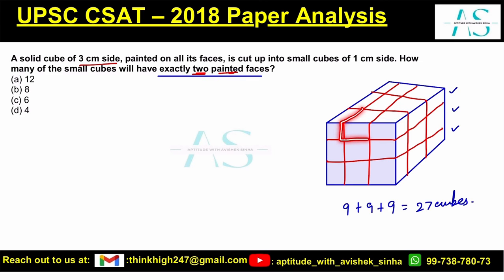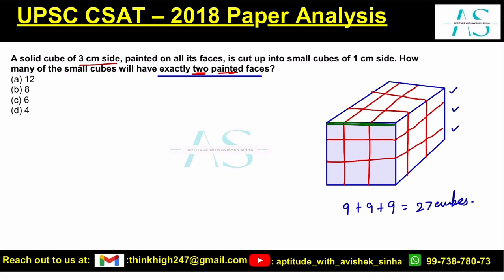We are looking for cubes which have only 2 faces painted. These are the cubes on the edges — specifically 1 on each edge, not at the corners. How many edges are there in a cube? 12. And we get 1 cube per edge with exactly 2 painted faces. So we have 12 cubes which will have exactly 2 faces painted.